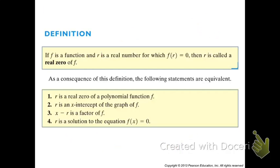So let's take a look at this definition, and you should copy everything down here and be able to explain every part of it. If f is a function and r is a real number for which f of r equals zero — meaning the function's value is equal to zero for some value r — then r is called a real zero of f. We've done a little bit of this on the calculator when calculating zeros of functions, which are their x-intercepts. There are four statements that are equivalent, contained in the bottom yellow box.